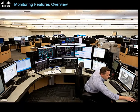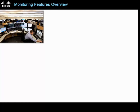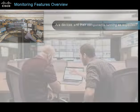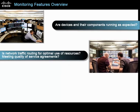Network monitoring tasks comprise a broad range of activities, including monitoring the network infrastructure to determine whether devices and their components are running as expected, and monitoring network performance to assess whether network traffic is routing for optimal use of resources and meeting quality of service agreements.